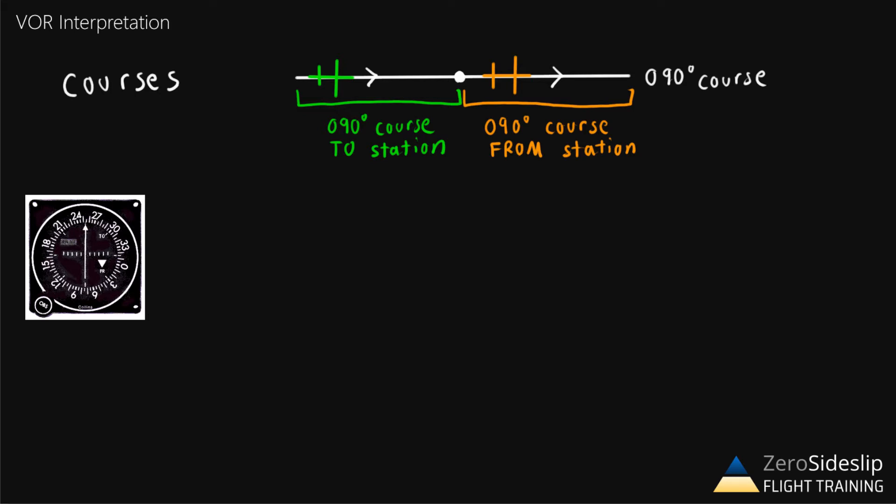Another piece of terminology that we'll use: if we were to draw a line going perpendicular to our selected course of 090, we can divide up the area around the VOR into two parts. On the west side of the VOR, if the airplane is located anywhere to the west of this dashed line, we say the airplane is on the to side. Conversely, if the airplane is on the east side of that dashed line, we would say that the airplane is on the from side.